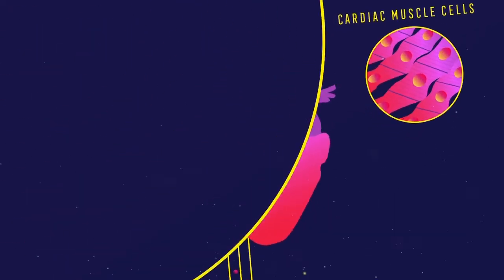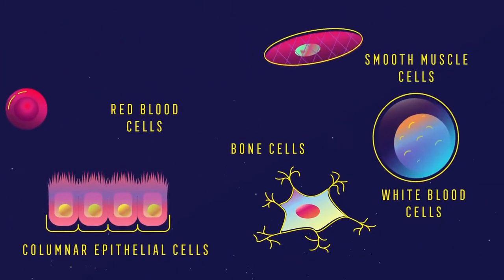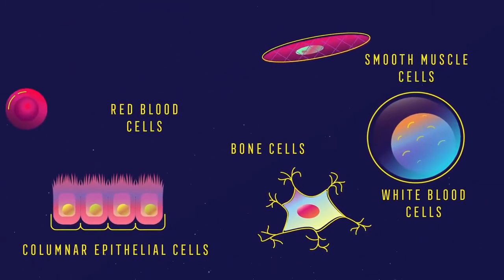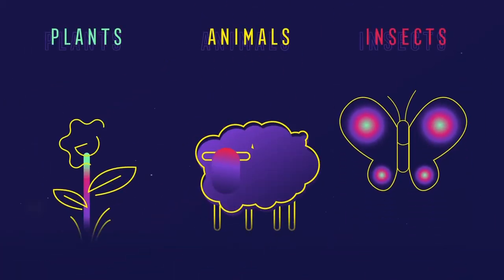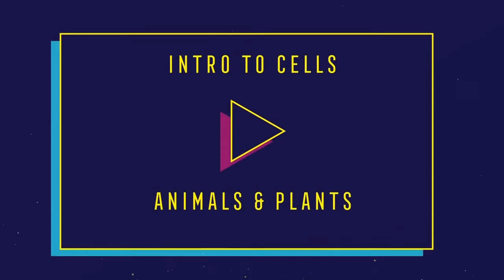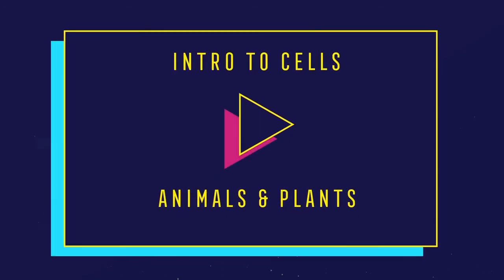So, cells come in all shapes and forms and have all sorts of jobs. But they are all fundamental building blocks of living organisms. Watch this video to learn more about different types of cells.